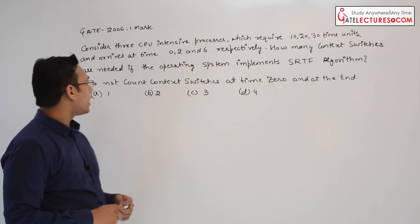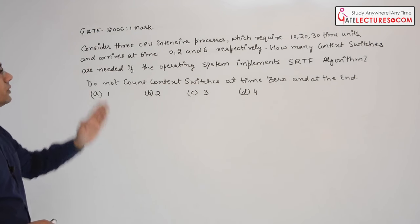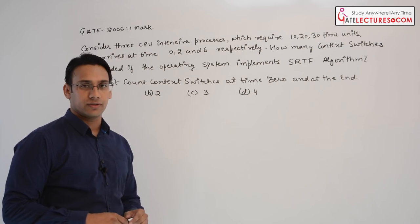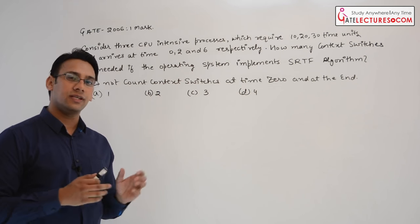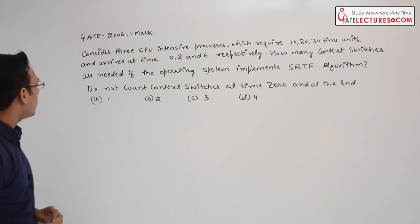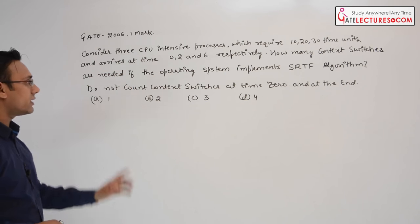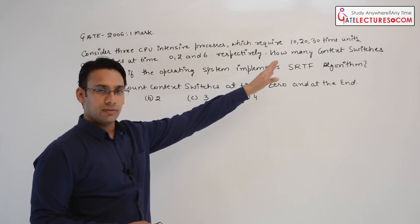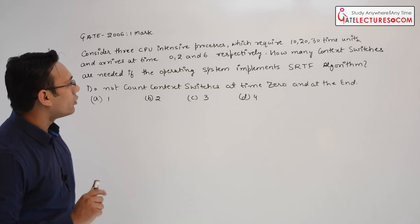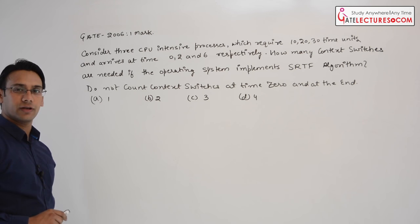Consider this question asked in GATE 2006. We have three CPU-intensive processes which require 10, 20, and 30 time units. They are called CPU-intensive because these processes take more CPU time compared to I/O time. The processes arrive at time 0, 2, and 6. The question asks how many context switches are needed if the operating system implements the Shortest Remaining Time First algorithm.